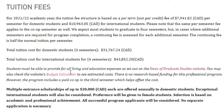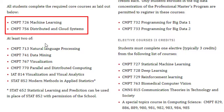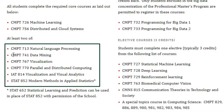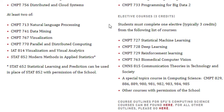For the Big Data concentration curriculum, you have to complete 12 credits from core courses — which are Machine Learning and Distributed Cloud Systems — and two elective courses selected from a set of six shown. You also have to complete 12 credits of lab courses: Programming for Big Data 1 and Programming for Big Data 2. Additionally, you must select a 3-credit elective course from a separate bucket, depending on your interest.